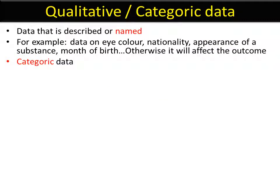Qualitative data or categoric data is named. For example, your name is categoric data. You could be called Dave, Stephen, Mohammed, Susan, whatever it is. Your eye color is a name, it's not a number. Your nationality is something that's described and it's categoric or qualitative data.